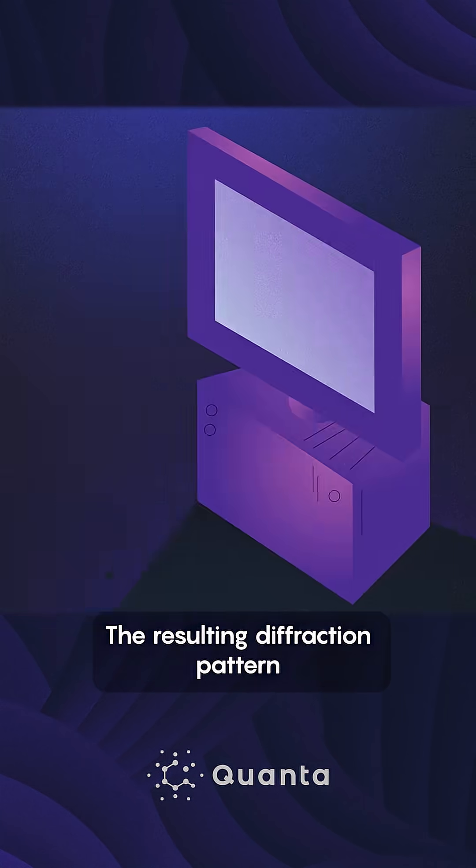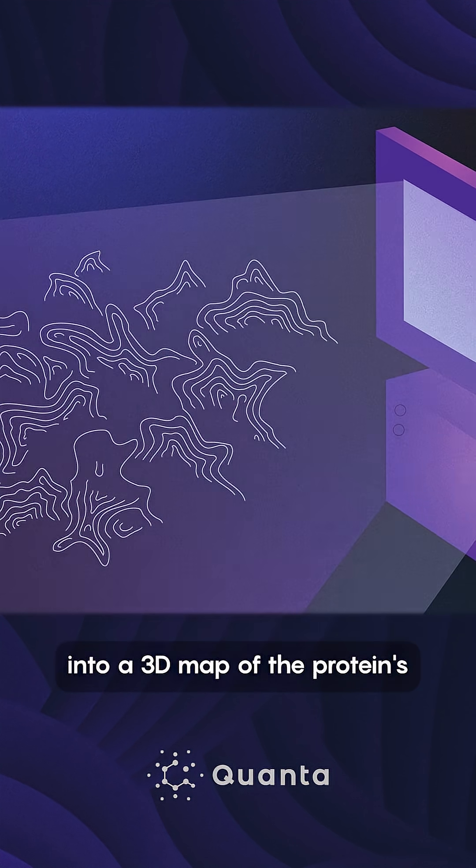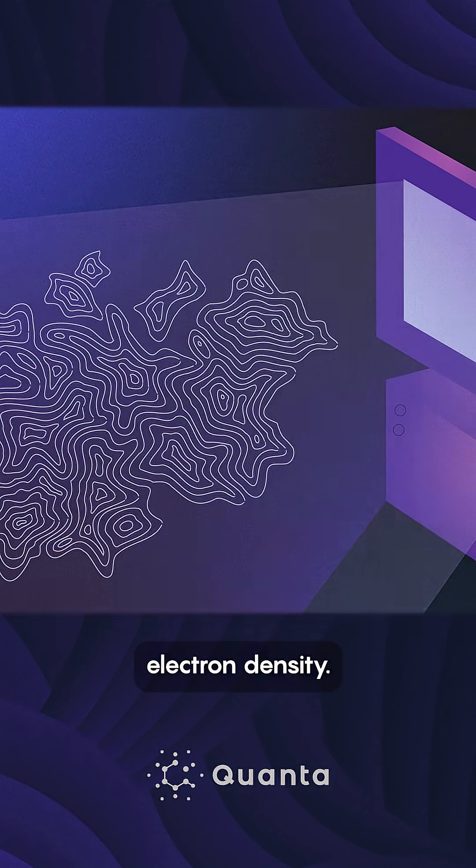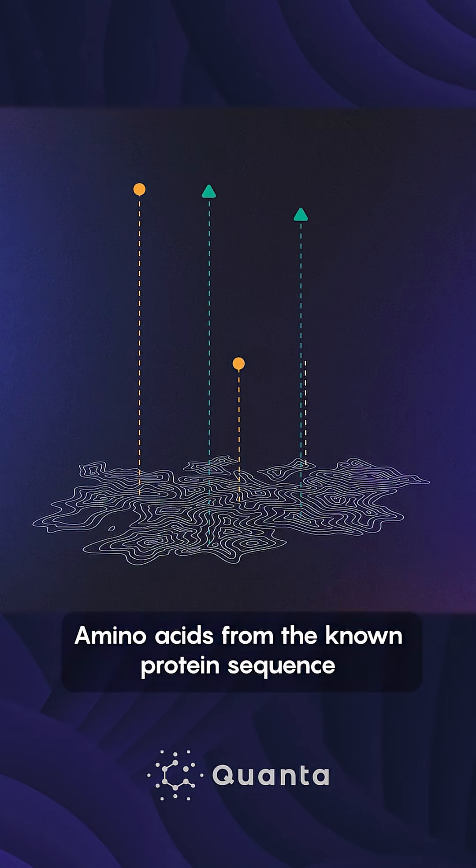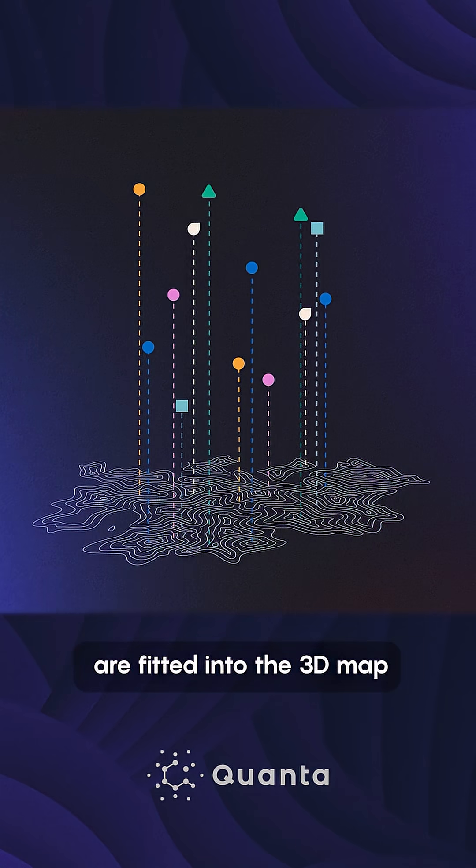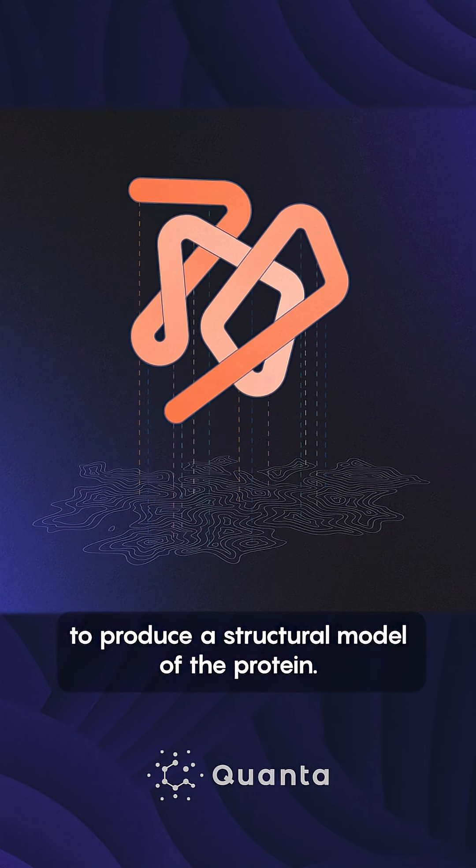The resulting diffraction pattern is then transformed by a computer into a 3D map of the protein's electron density. From here, it's like solving a jigsaw puzzle. Amino acids from the known protein sequence are fitted into the 3D map to produce a structural model of the protein.